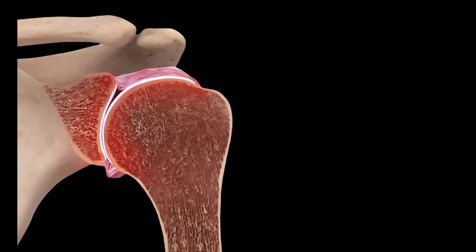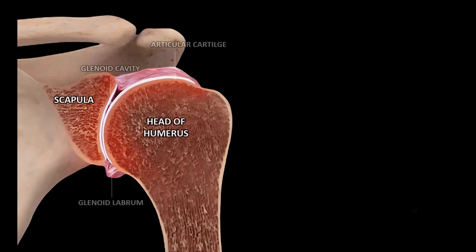The glenohumeral joint is a synovial joint that connects the upper limb to the axial skeleton. It is a spheroidal joint formed by the glenoid fossa of the scapula, the glena, and the head of the humerus. The glenohumeral joint, the most significant of the shoulder, is the joint with the greatest range of motion in the human body.